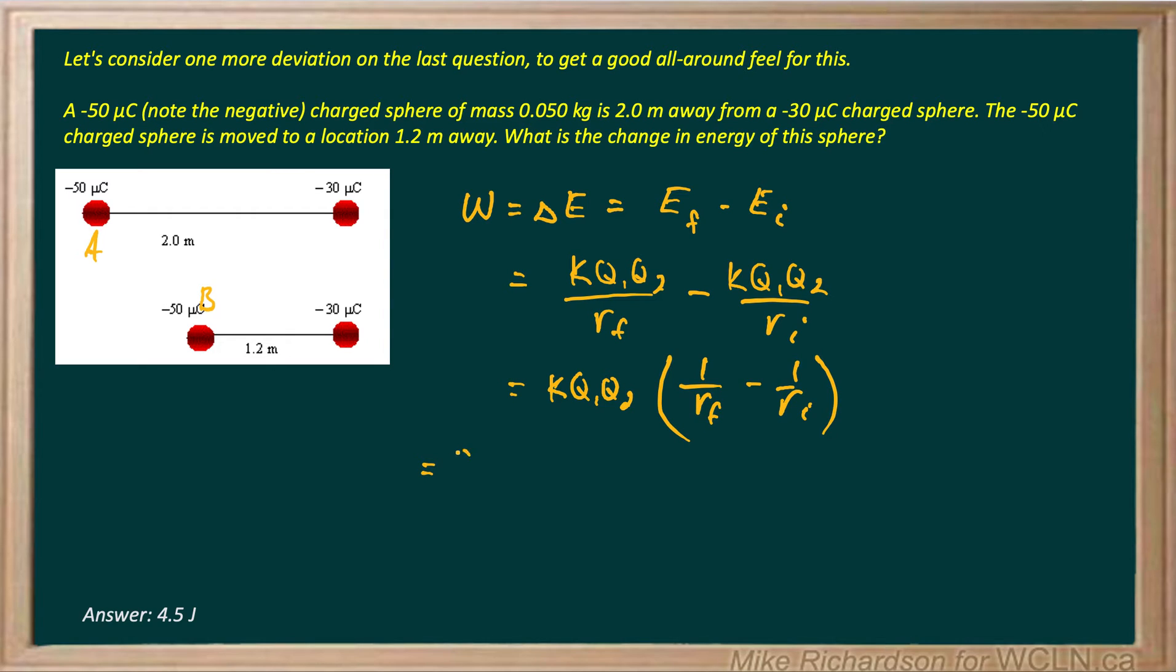Now let's put in our values. 9 times 10 to the 9, and again we've got to put in our charges exactly the way we see them. Q1, negative 50 times 10 to the negative 6. Q2, negative 30 times 10 to the negative 6. r final, 1 over 1.2 minus 1 over 2 meters.